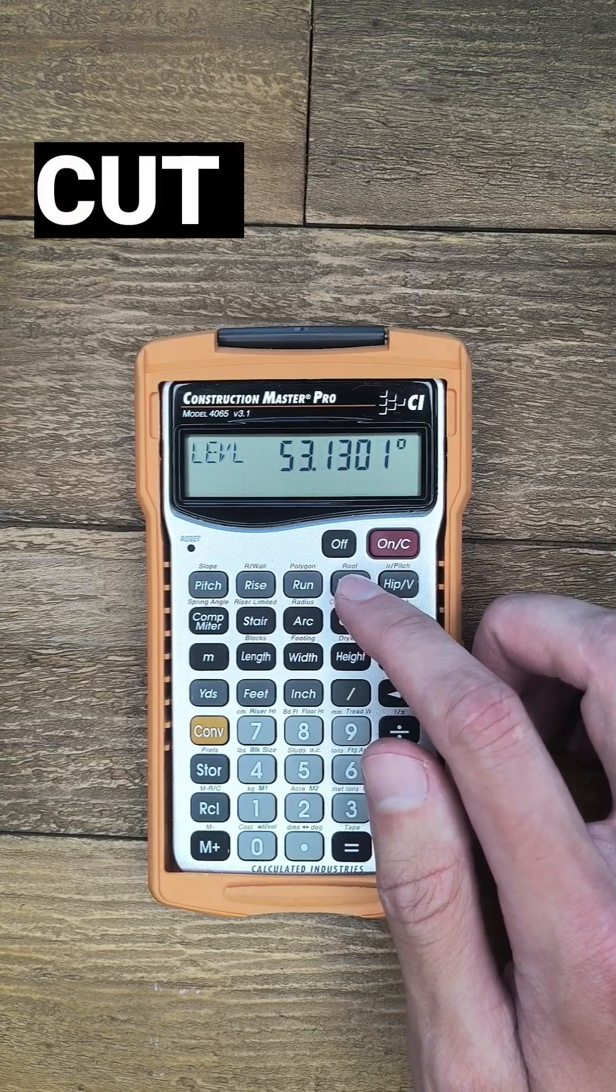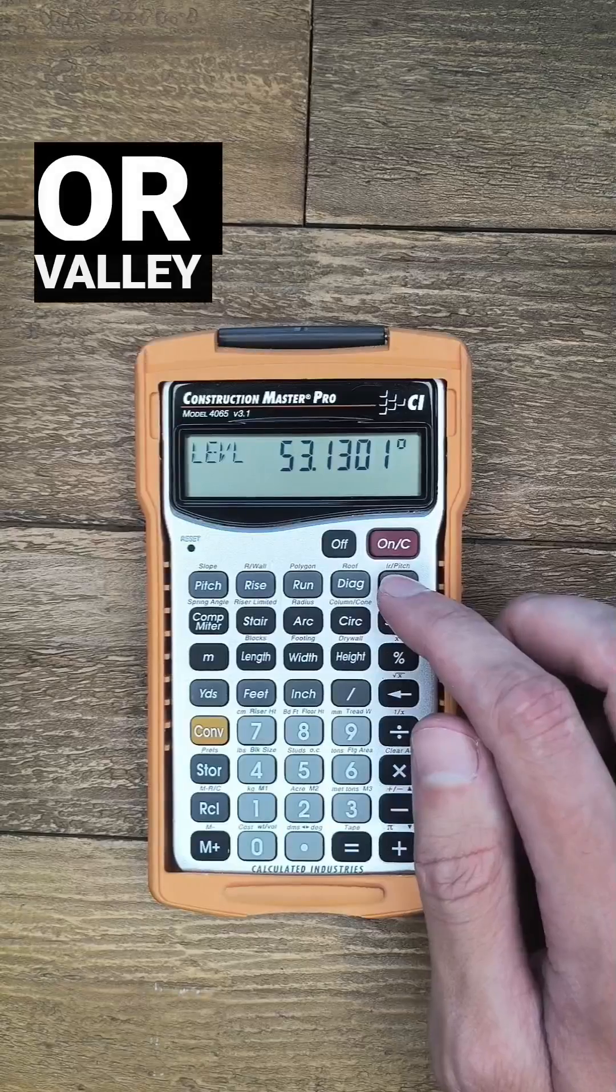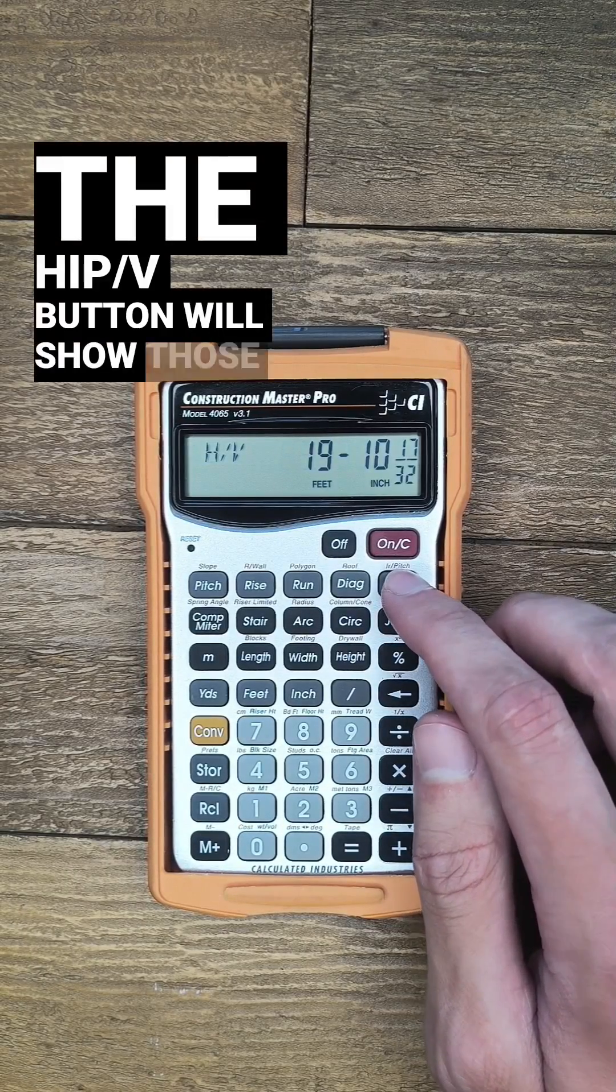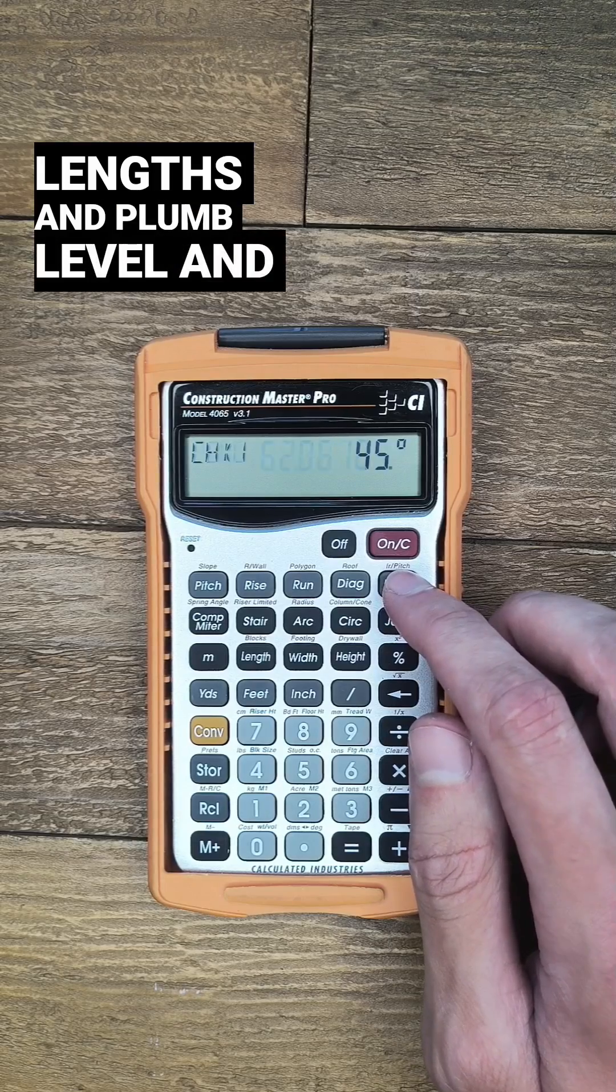If you have a hip or valley on this roof section, the hip v button will show those lengths and plumb level and cheek cut angles.